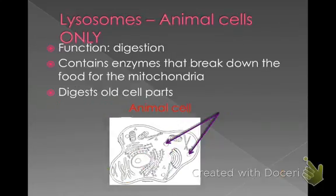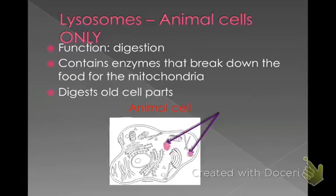This next organelle is only found in animal cells. They're called lysosomes, and their function is to help with digestion. Remember, animal cells cannot make their own food — they have to get their food, and digestion occurs in these areas called lysosomes. Those are the perfectly round dots in your animal cell. Lysosomes digest old cell parts that are worn down or not working correctly, and they also digest food.